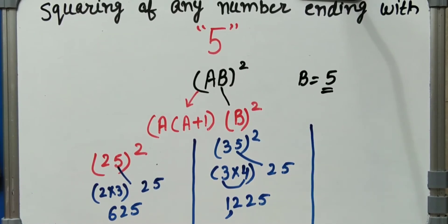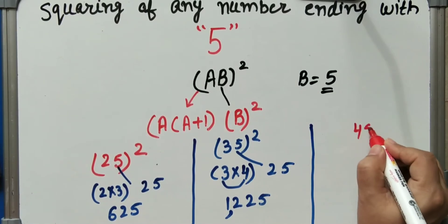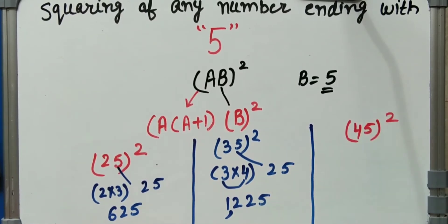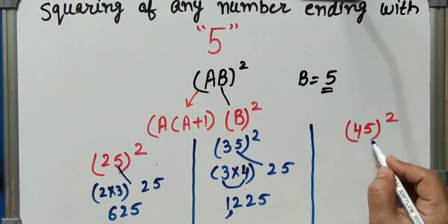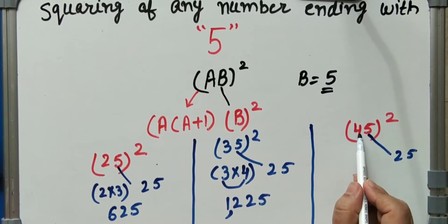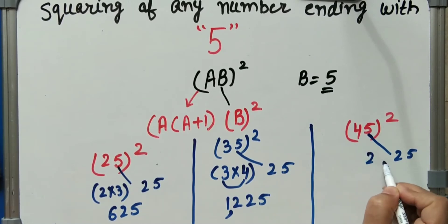Next example, let us suppose we will take the number 45 square. 5 square means 25, and 4, next number is 5. 4 into 5, that is 20, 25.